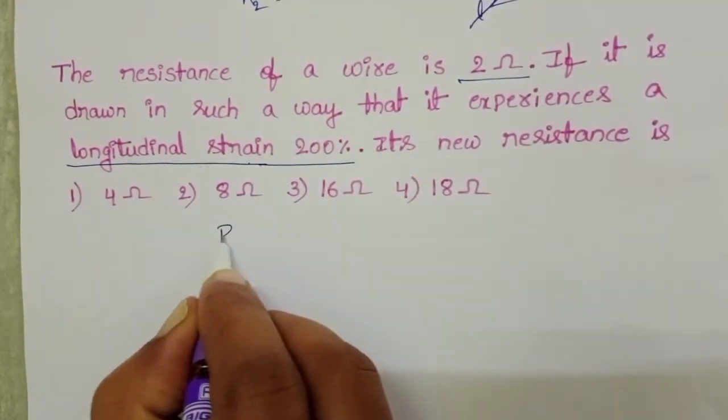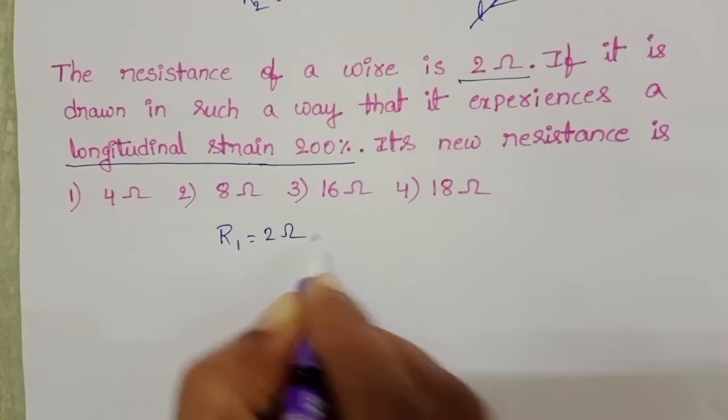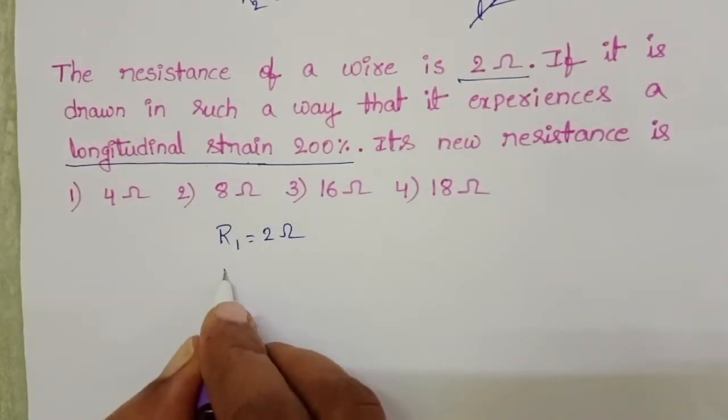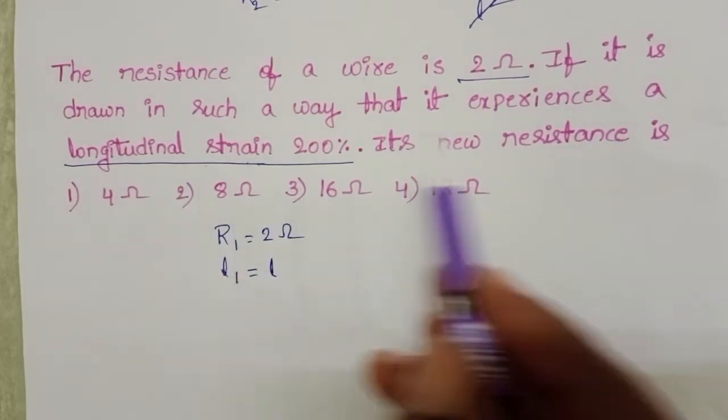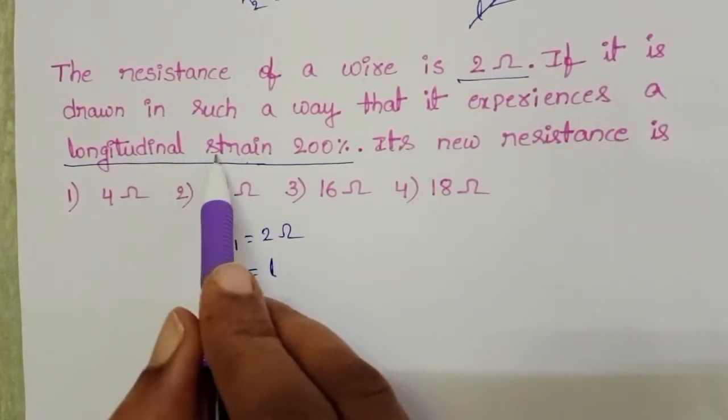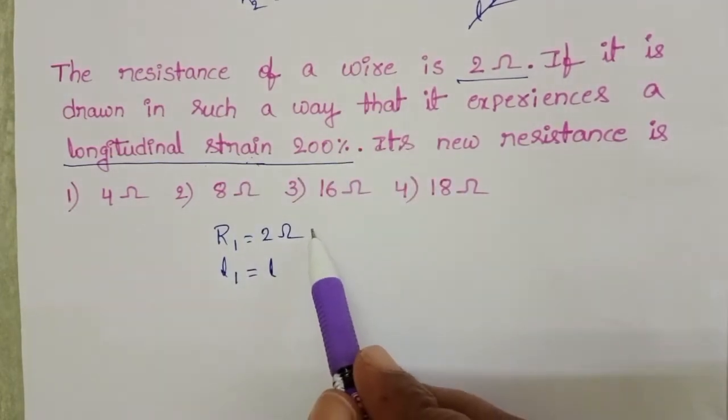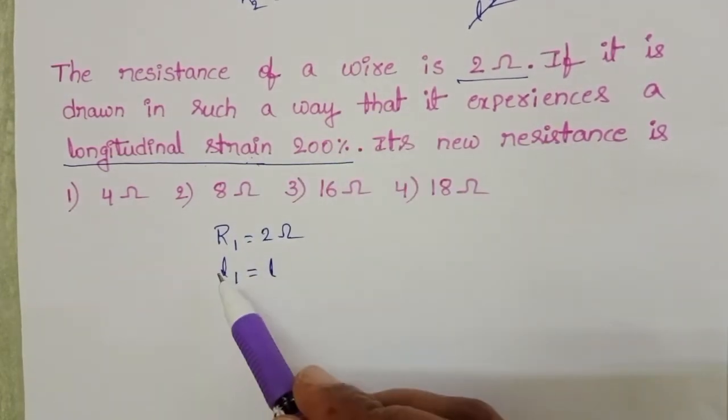The resistance of the wire equals 2 ohm and the length of the given wire equals L. After this, it experiences a longitudinal strain of 200%. Then the length of the wire changes.